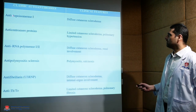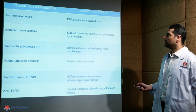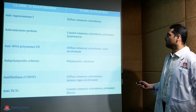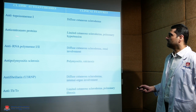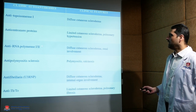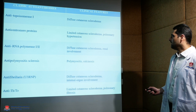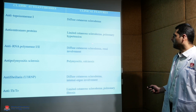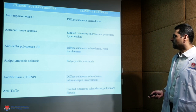Various autoantibodies commonly associated include anti-topoisomerase 1 in the diffuse cutaneous variant, anti-centromere proteins in the limited cutaneous variant, and anti-RNA polymerases in renal involvement and diffuse cutaneous variant.